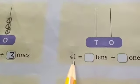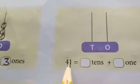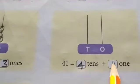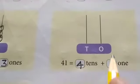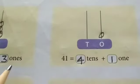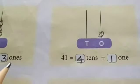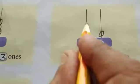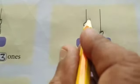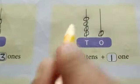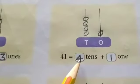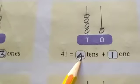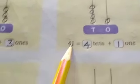Here, forty-one. Forty-one has four tens and one one. One bead in ones place and four beads in tens place. Four tens means forty plus one — forty-one.